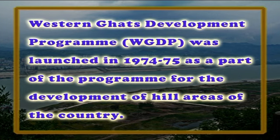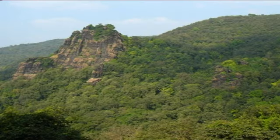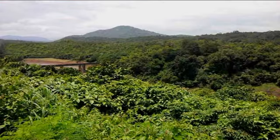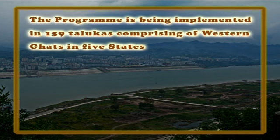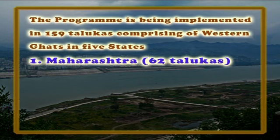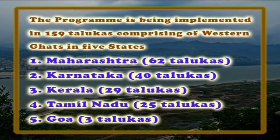Next are the Western Ghats. The Western Ghats Development Program, that is WGDP, was launched in 1974-75 as a part of the program for the development of hill areas of the country. For delineation of the areas for coverage by WGDP, the criteria of elevation and contiguity with a taluk was adopted. The program is being implemented in 159 talukas comprising the Western Ghats in five states: Maharashtra, Karnataka, Kerala, Tamil Nadu and Goa.